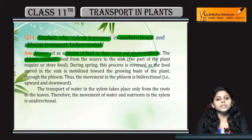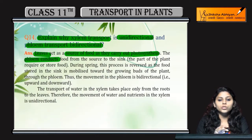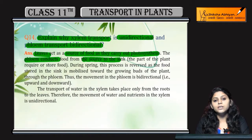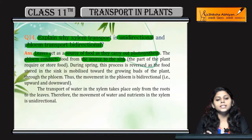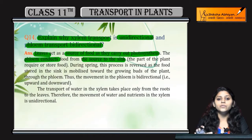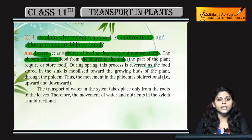Phloem conducts food from source to sink. Source means leaves, and sink means other parts of the plant where food is stored to keep the plant going.